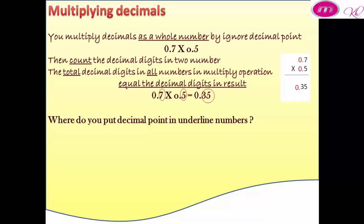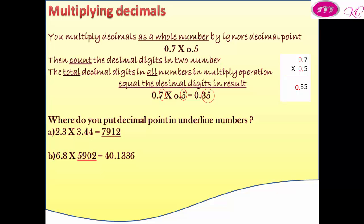Where do you put the decimal point in the following numbers? Number A: 2.3 by 3.44 equals 7912 — we want to put the decimal point in this number. Number B: 6.8 by 5902 equals 40.1336 — we want to put the decimal point in number 5902. Number C: 23 by 12.34 equals 28.382 — we want the decimal point in number 23.